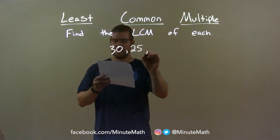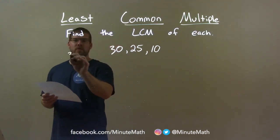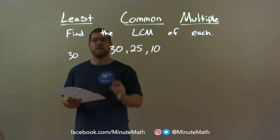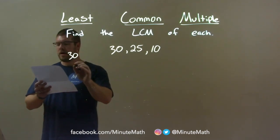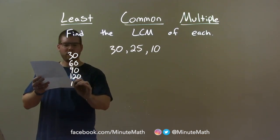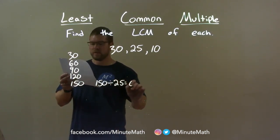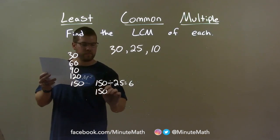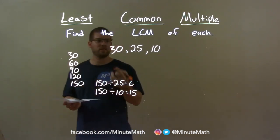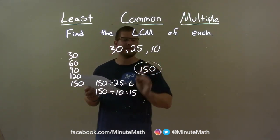30, 25, and 10. I take the largest, 30, and find its multiples, checking if each is divisible by both 25 and 10. 30, 60, 90, and 120 are not, but 150 is. 150 is divisible by 25 — that's 6 times — and 150 is divisible by 10 — 15 times. So 150 is the first multiple of 30 divisible by the other two numbers, and that is my least common multiple.